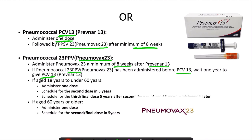For patients between the ages of 18 and 60, we first administer one dose of PPSV23. The second dose is usually administered after 5 years. The third and final dose is administered 5 years after the second dose or at age 65, whichever is later. If the patient is 60 years or older, the first PPSV23 vaccine is administered and the second dose is scheduled in 5 years.